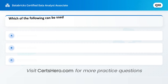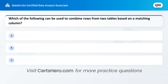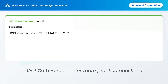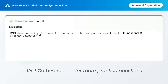Ready for a challenge? Which of the following can be used to combine rows from two tables based on a matching column? A. Join. B. Union. C. Intersect. Correct answer is A: Join. JOIN allows combining related rows from two or more tables using a common column. It is foundational to relational databases and multi-table queries.